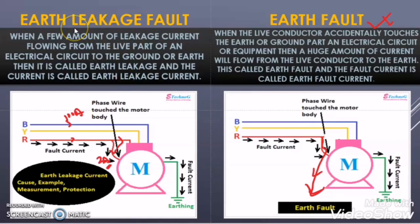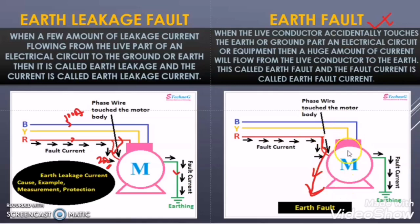So I hope now you can relate the difference between earth leakage fault and earth fault. In earth leakage fault, the phase does not get lost — only a small amount of the phase current which is supposed to be in the motor winding is leaking through the body of the motor to earth. But in the case of earth fault, a complete phase loss happens and the current which was supposed to be 100 Ampere turns to 0 Ampere due to the earth fault condition.